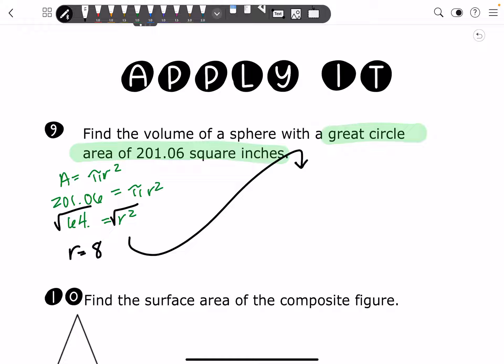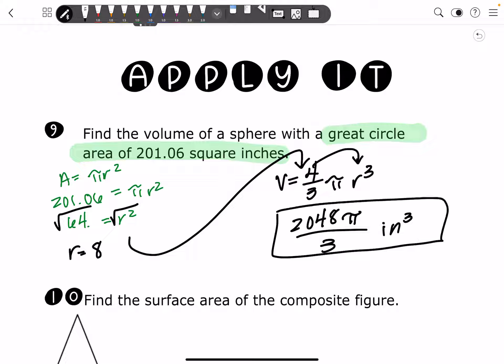And now you're going to go ahead and find the volume of the sphere that we were originally asked to find. And plug in that 8. When you plug it all in, you get 2048 pi over 3 inches cubed, or cubic inches, as your exact answer.